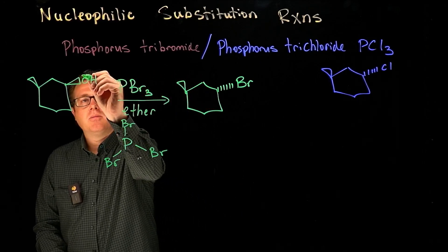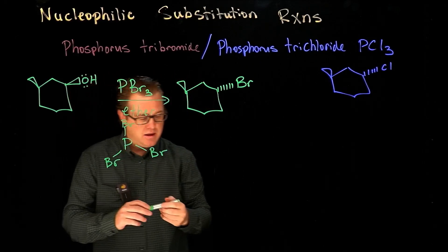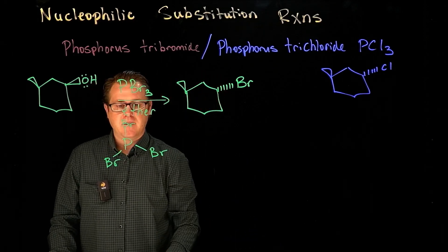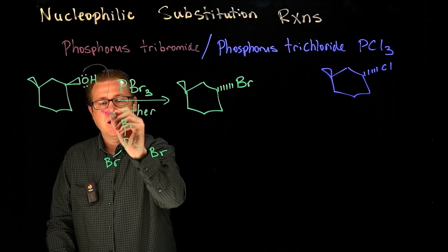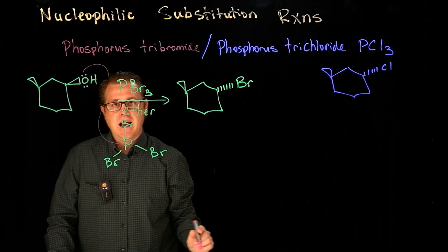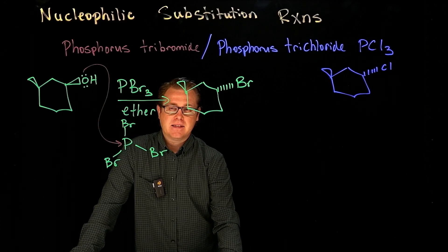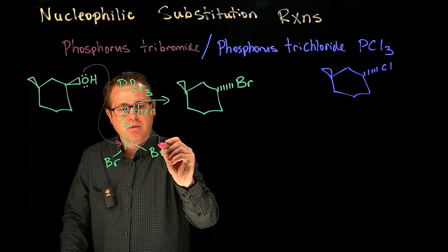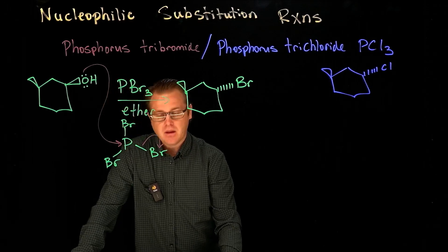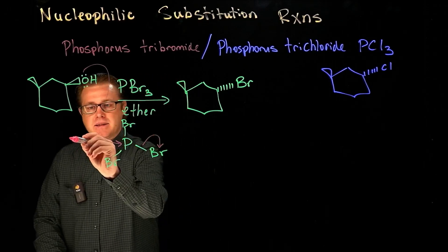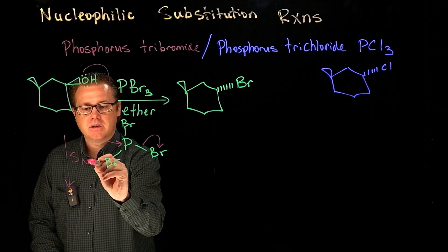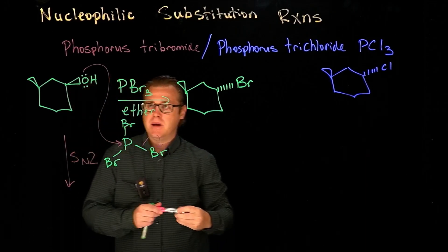Now we have lone pairs on this oxygen, and the phosphorus is the electrophile. We'll take this lone pair and attack. At the same time, one of the bromines leaves. What type of mechanism did we just invoke? An SN2 mechanism.